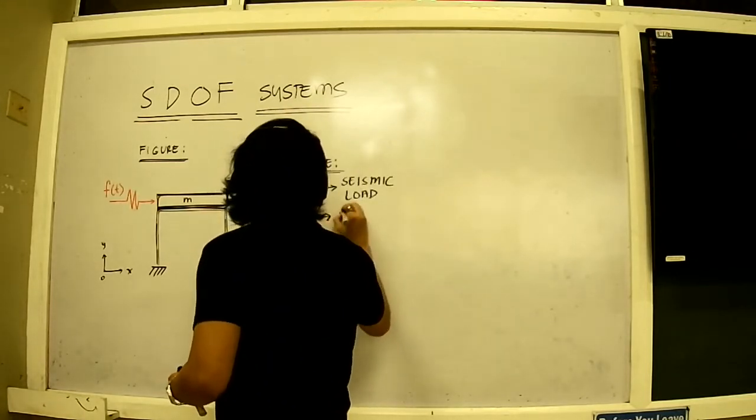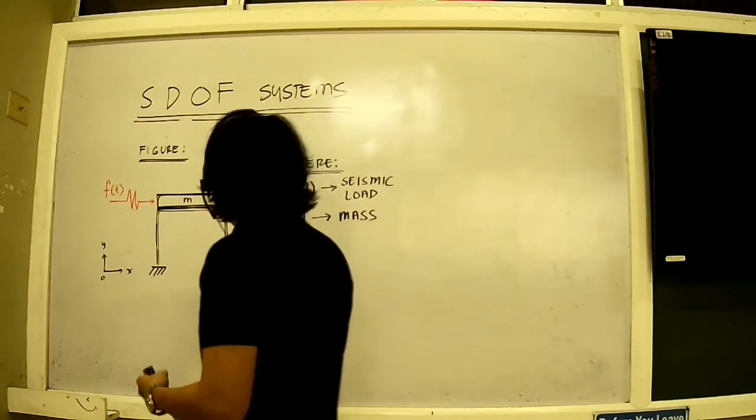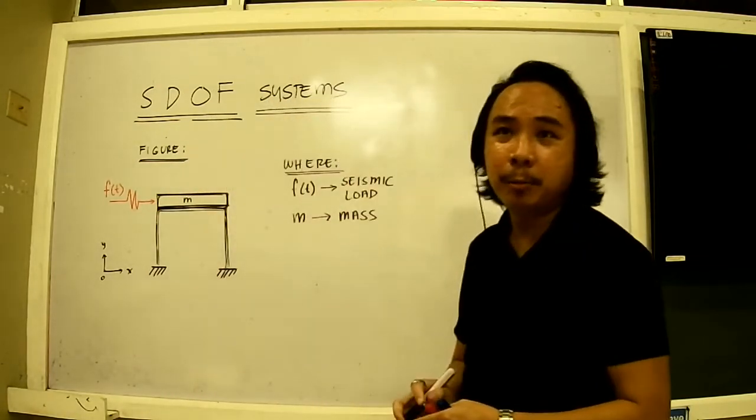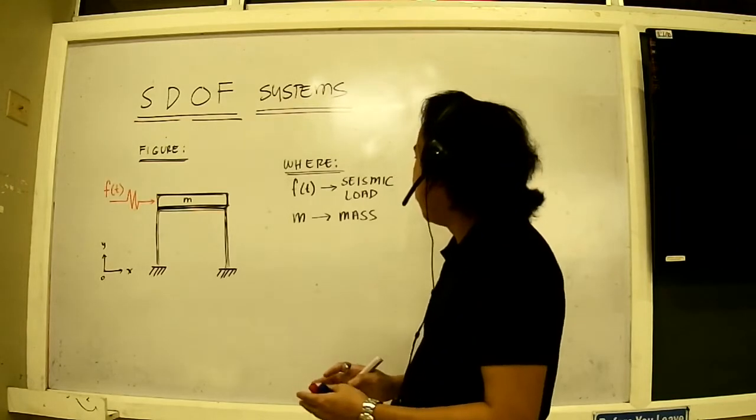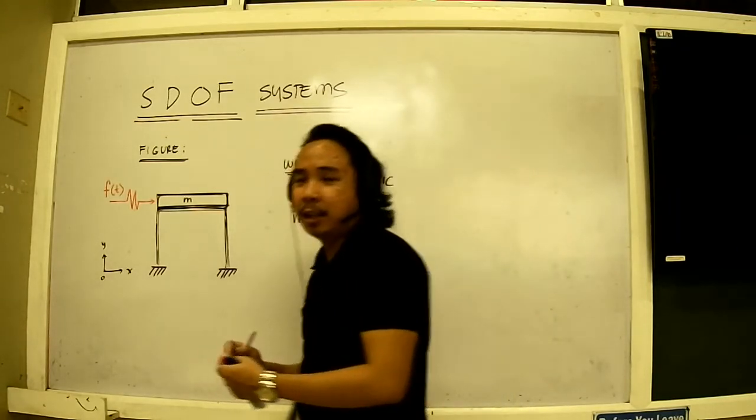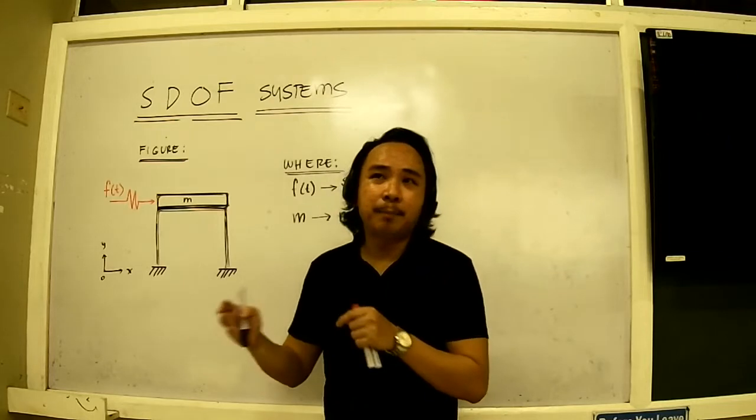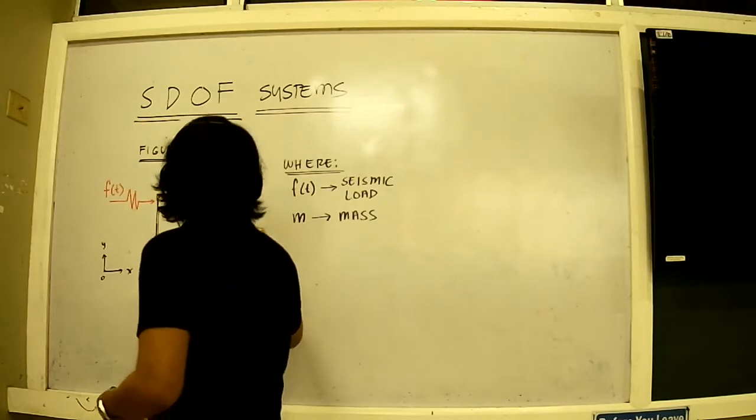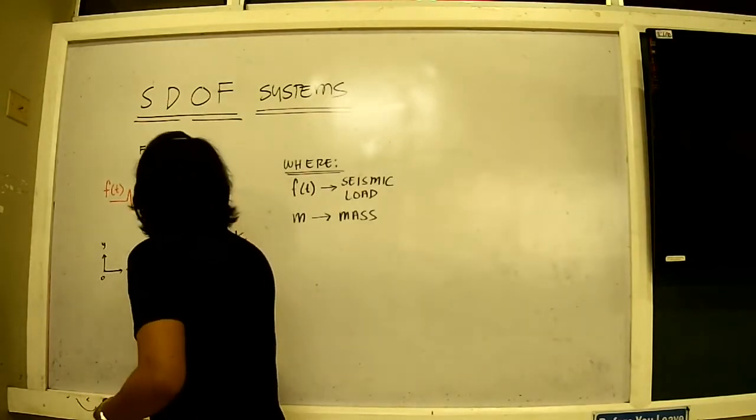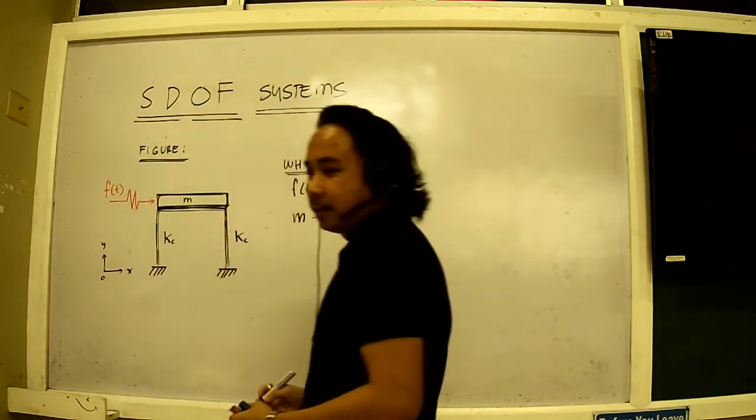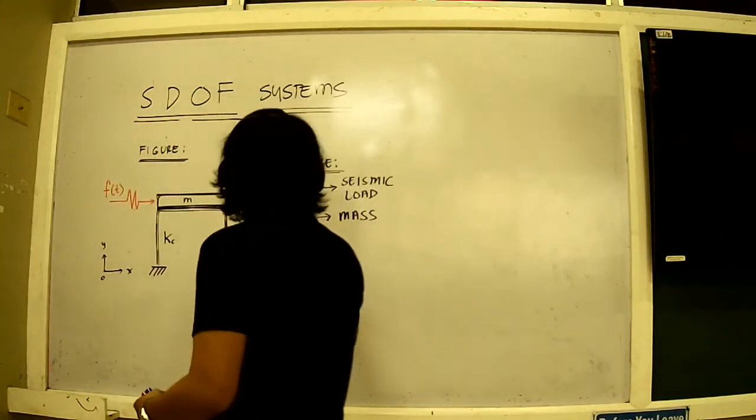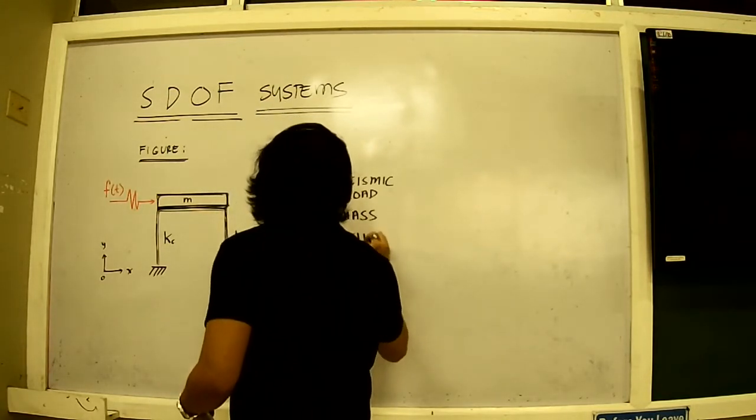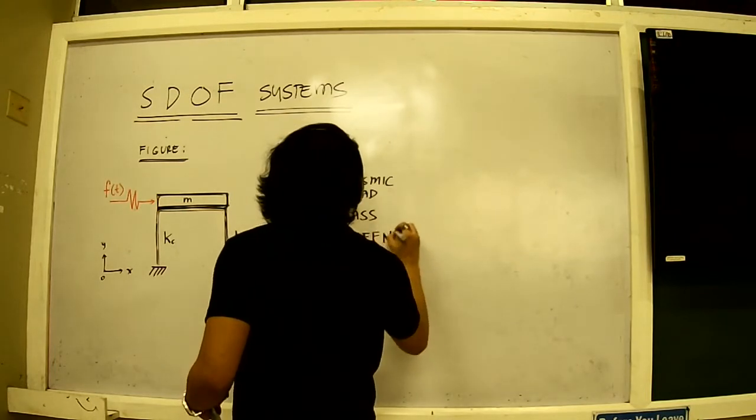Now, the columns, inherently, they have also what we call as the stiffness, or what we will observe as the ability of a structure that can resist motion. That is stiffness. Now, these columns possess K stiffness. I'll just generalize this as the K of the structure. So, this is what we call as the structural stiffness.